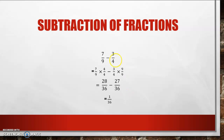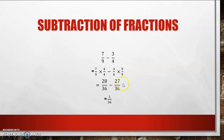Then we are moving on to subtraction of fractions. As you can see, my denominators are not the same. I need to get them the same. 4 is, however, not a factor of 9, so I need to find the lowest common multiple, which will be 36. 7 times 4 will give me 28 over 36, and 3 times 9 will give me 27 over 36. Subtracting only my numerators, I end up with 1 over 36.